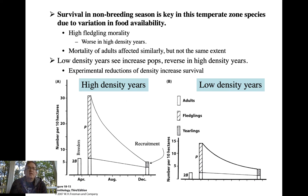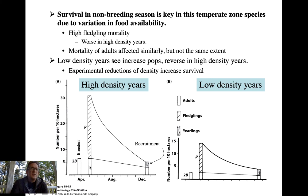Here's a study that looked at population patterns in high density versus low density years. In a high density year, you start off before the breeding season with a certain number of breeders per 10 hectares. During this year they had really high reproductive success — the bar here represents the number of fledglings produced, which is pretty good. By December, quite a few adults have died because of high density competition for resources, but the most dramatic drop is in the number of fledglings — not very many survived in this high density year.